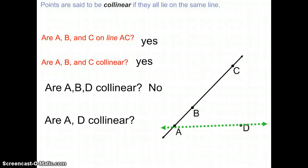So if I ask you are A, D collinear, the answer is yes. Because through any two points, there is always one line. Even though they're not on AC, A, D are collinear. So any two points are always collinear.